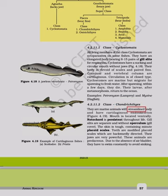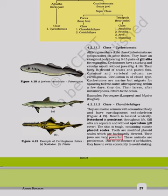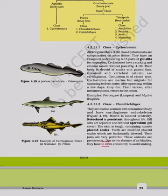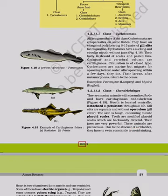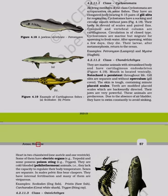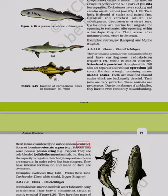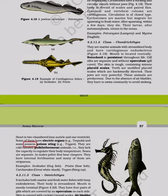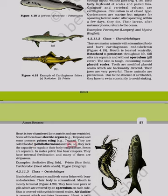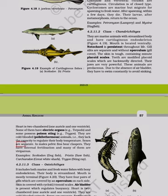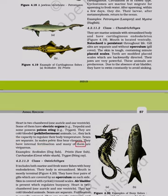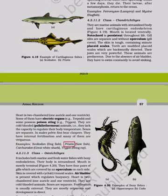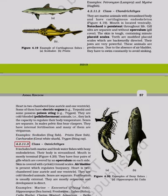Class Chondrichthyes: Marine animals with streamlined body and cartilaginous endoskeleton. Mouth located ventrally; notochord is persistent throughout life. Gill slits are separate and without an operculum (gill cover). Skin is tough with minute placoid scales; teeth are modified placoid scales. Absence of air bladder means they must swim constantly to avoid sinking. Heart is two-chambered. Some have electric organs (e.g., Torpedo); some possess poison stings (e.g., Trygon). They are cold-blooded (poikilotherms). Sexes are separate; males have claspers; fertilization is internal; many are viviparous. Examples: Scoliodon (dogfish), Pristis (sawfish), Carcharodon (great white shark), Trygon (stingray).